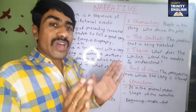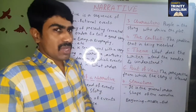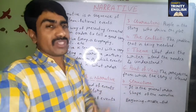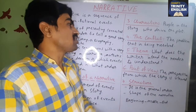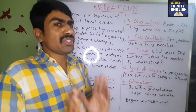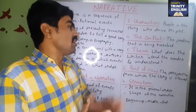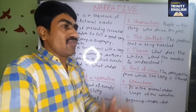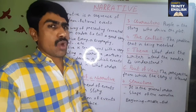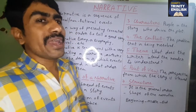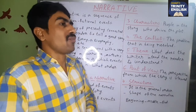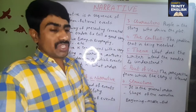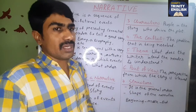The next feature is conflict. The conflict is the problem — in the narrative, what is the problem and how it is resolved. Next is theme. The theme is what exactly the writer intends the reader to understand — the way in which the author wants the reader to understand the story. Then we have point of view, which is the perspective from which the author or writer views the story.